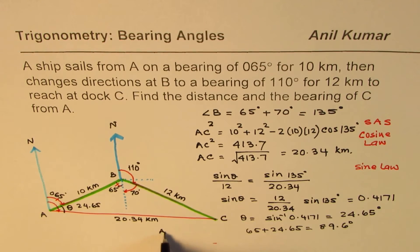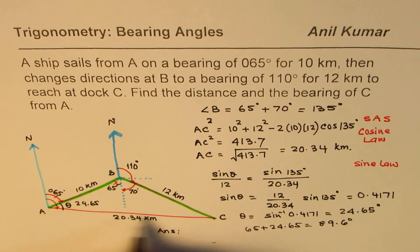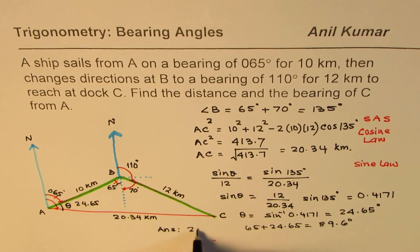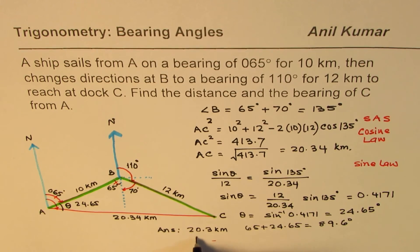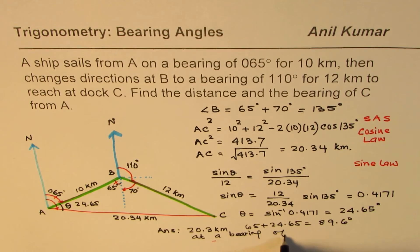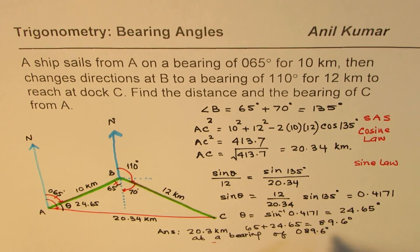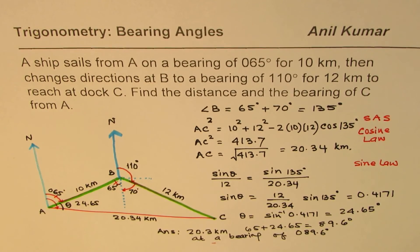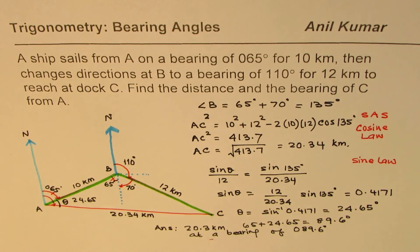So we'll write down our answer. The answer is that the distance from A to C is 20.3 kilometers at a bearing of 089.6 degrees. So I hope it is absolutely clear how to solve such questions. Important thing is to sketch the diagram neatly and then solve the triangles.